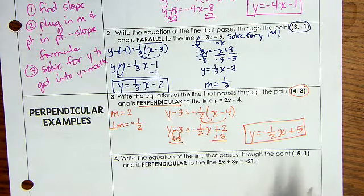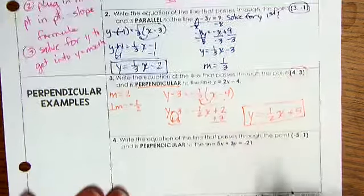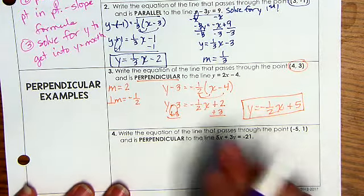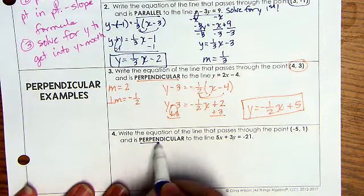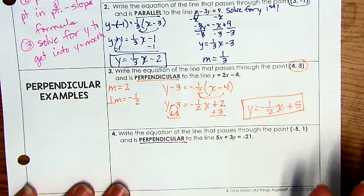Number 4. This is the same type of scenario. Like for parallel, the only difference is we have to have a perpendicular slope. So I've got to find it first.